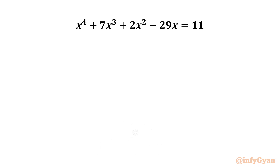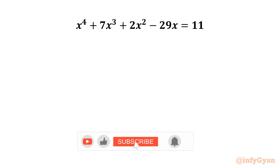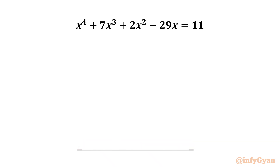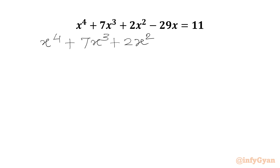Hello friends, welcome back to InfiGyan. Today in this video we are having one very interesting question from Quartic Equations. So let's get started by writing all the terms to LHS. We will write x⁴ + 7x³ + 2x² - 29x - 11 = 0.